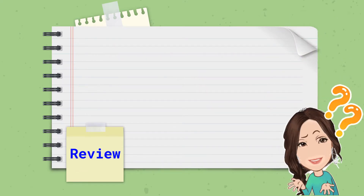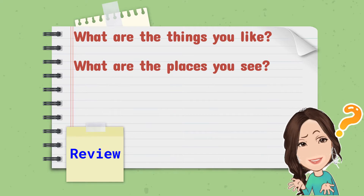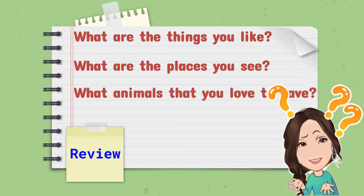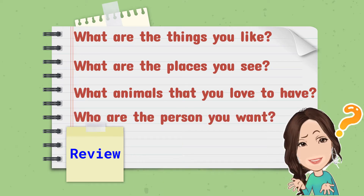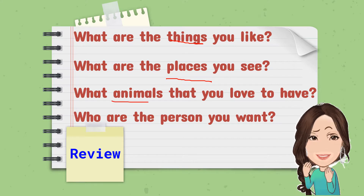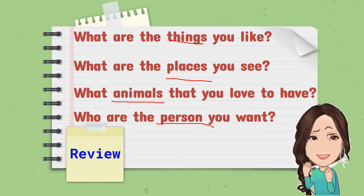Let us review our lesson last week about nouns. What are the things you like? What are the places you see? What animals do you love to have? And who are the persons you want? So, we have the words things, places, animals, and person — and these words refer to a noun.